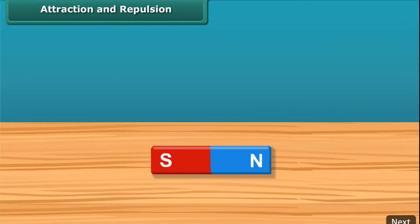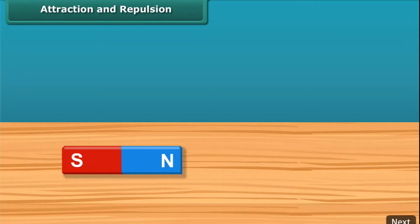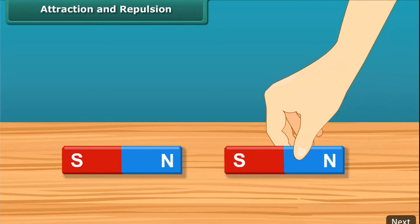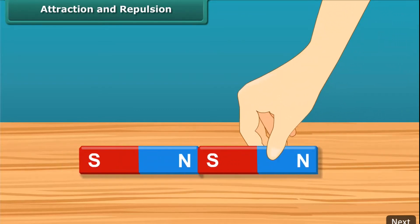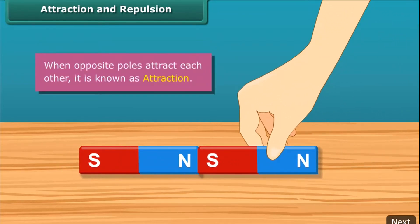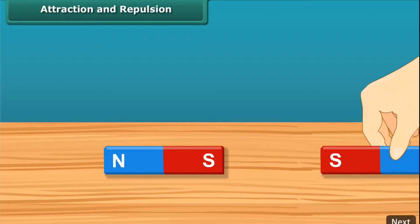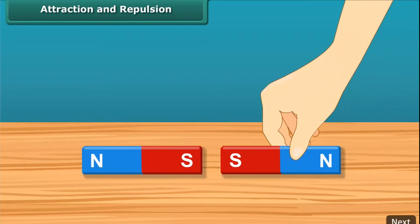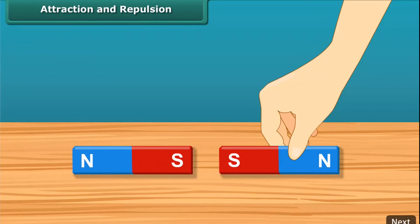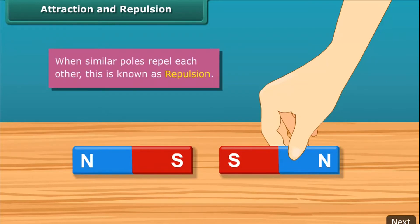Attraction and repulsion. Now that you know about poles of a magnet, let us look at the attraction and repulsion properties. When the south pole comes in contact with the north pole, they get attracted to each other — this is known as opposite poles attracting each other. Similarly, when the south pole comes in contact with another south pole, they do not attract each other; in fact, they repel each other — this is known as similar poles repelling each other.